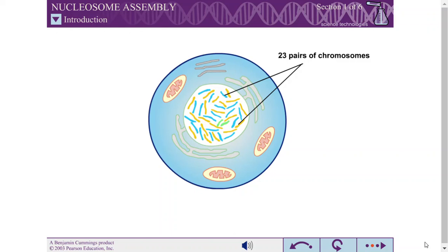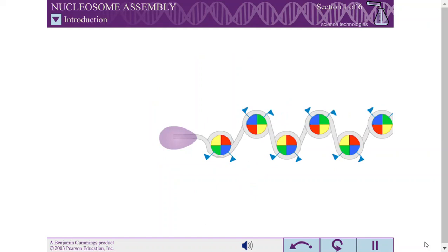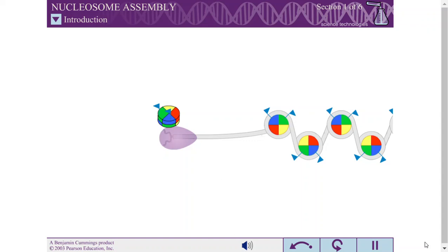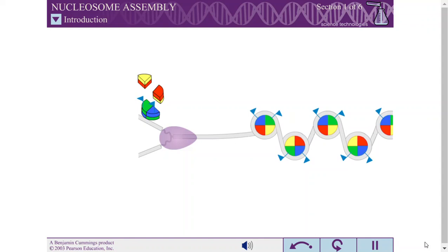Each time the cell divides, the DNA must be duplicated. After the DNA is copied, the two daughter strands are rapidly reassembled into nucleosomes. The old histones are carefully distributed between the two new DNA strands, and new histones are brought in to fill in the gaps.